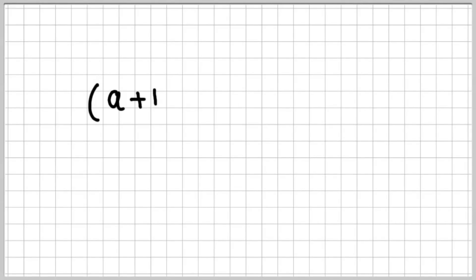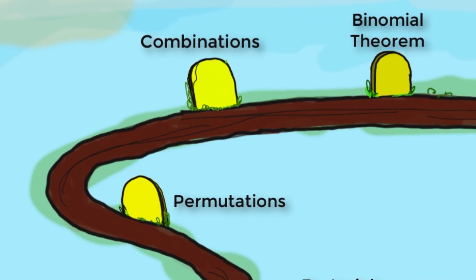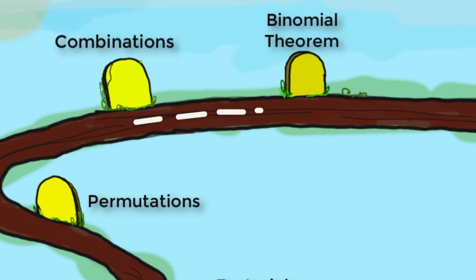Remember, a plus b the whole square is a square plus b square plus 2ab. This was taught to us in our school days. We will now see a generalized version of this result called the celebrated binomial theorem.